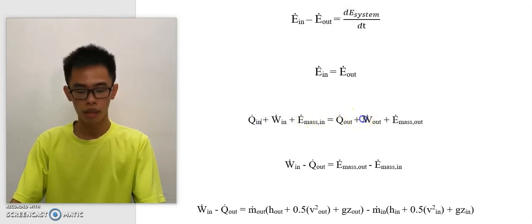Q_in and W_out are zero because no heat is supplied to the hair dryer and no work is done by the hair dryer. After derivation, we get this final equation.